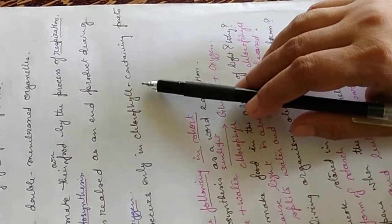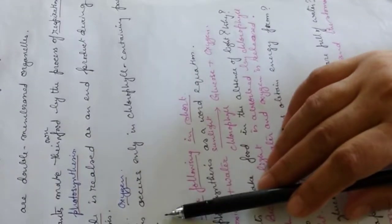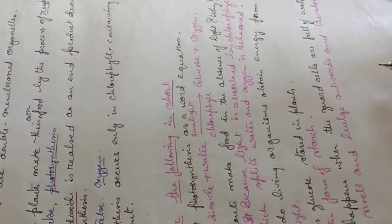The photosynthesis occurs only in chlorophyll-containing parts of the plant. That's true. Now we come to certain short questions.